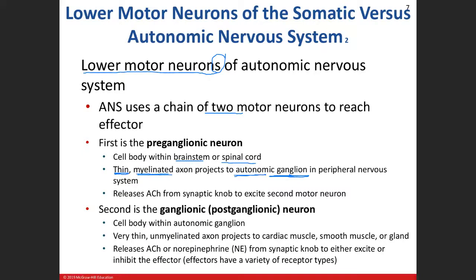Bundles of parallel axons in the peripheral nervous system are nerves; in the central nervous system they're called tracts — like the spinothalamic tract or corticospinal tract. The first preganglionic neuron releases acetylcholine, which is an excitatory neurotransmitter that stimulates our second neuron — the postganglionic neuron — whose cell body is in the autonomic ganglion.